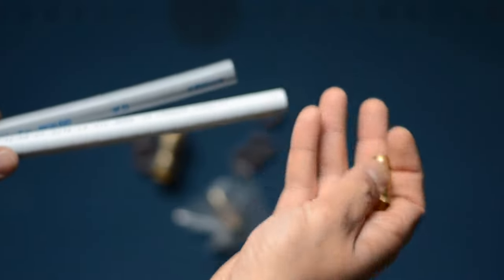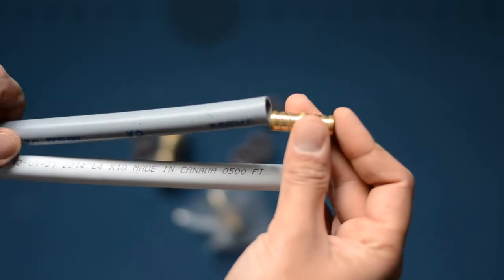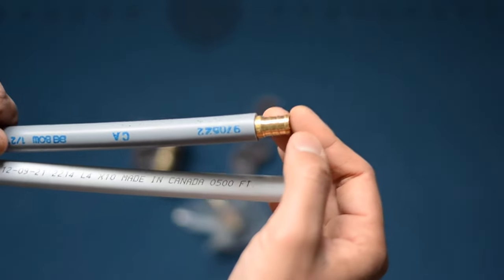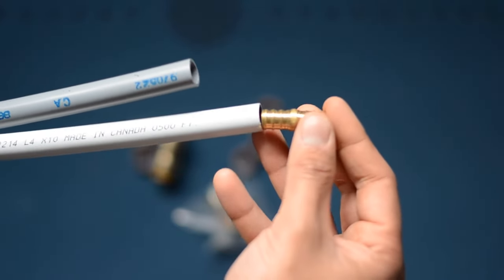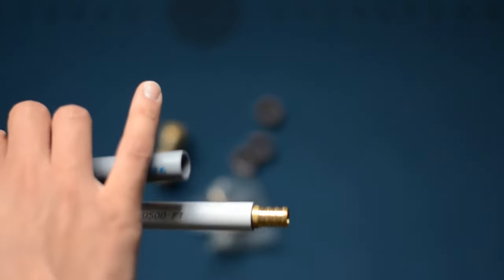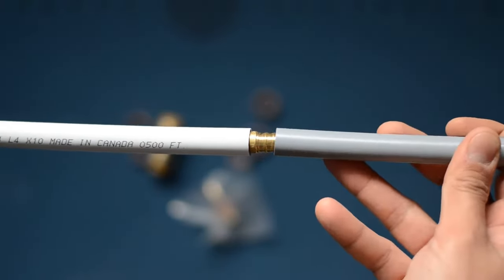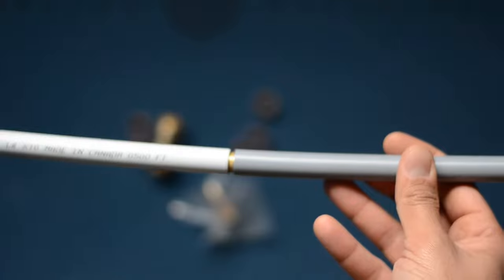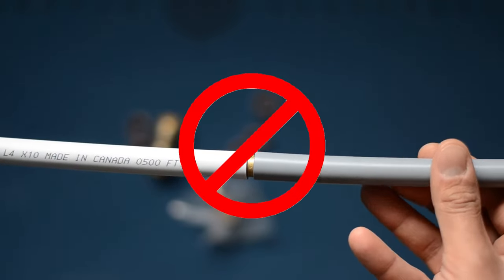But pex fittings fit into both pipes because they are smaller in size. Some people assume that this is correct fitting and they use them for poly B to pex transition. But you shouldn't do that. That can cause leakage which can damage the property.